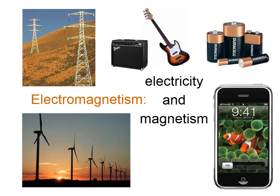Electromagnetism, as you can tell by the name, is electricity and magnetism, which are very related phenomena — two sides of the same coin, you might say.